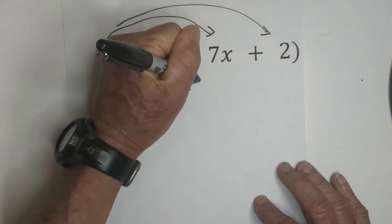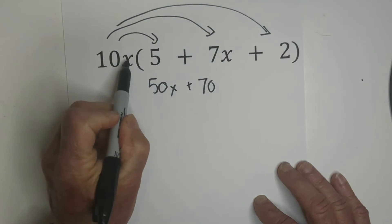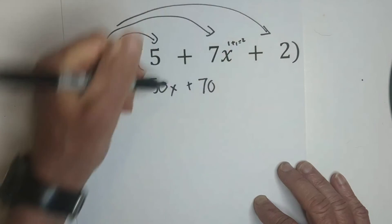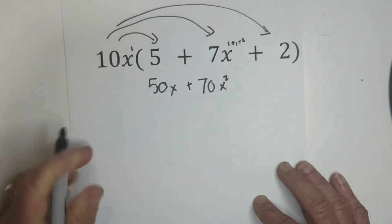We have like bases x and x. Technically, they both have a 1 here, so it is 1 plus 1, which equals 2.